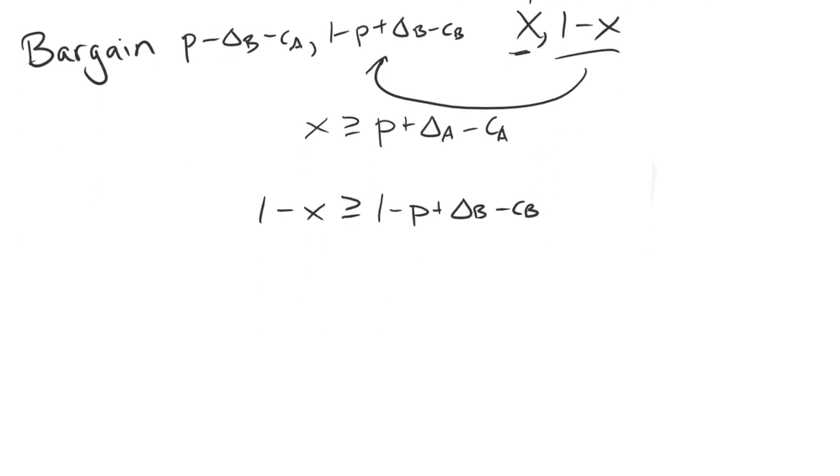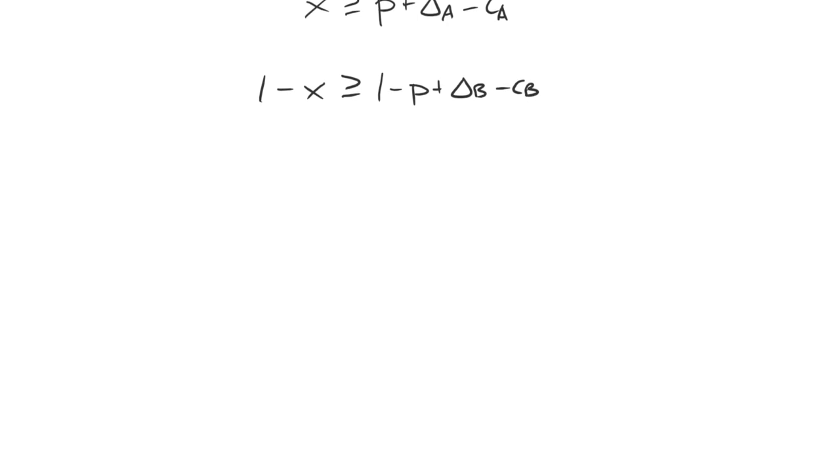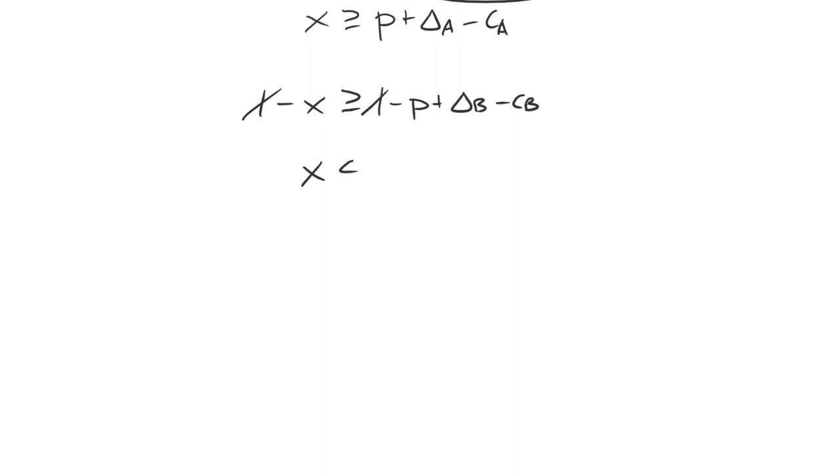So the first step toward manipulating these inequalities is to put it all in terms of X. So let's rewrite this second inequality by canceling out these 1s, and then we can't cancel anything else out. So if we just multiply it by a negative 1, flip the inequality, we'll have this in terms of X.